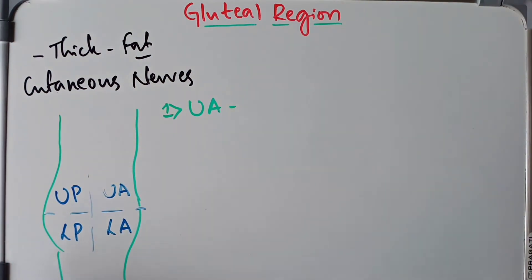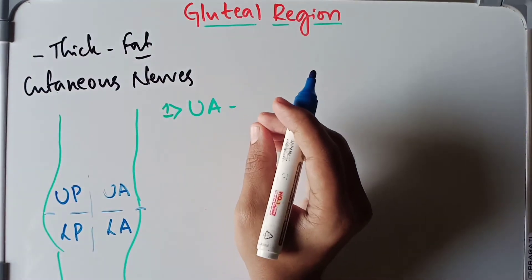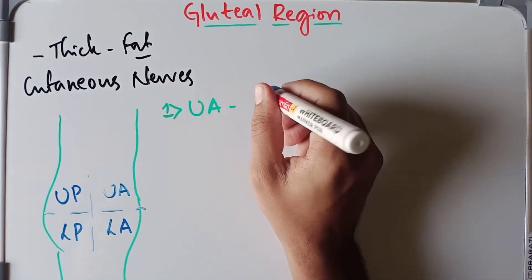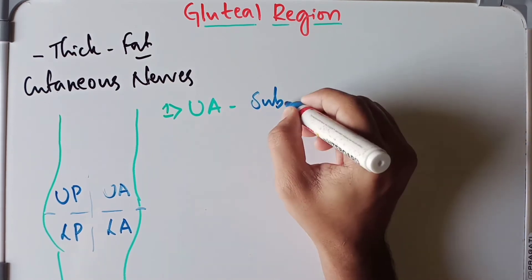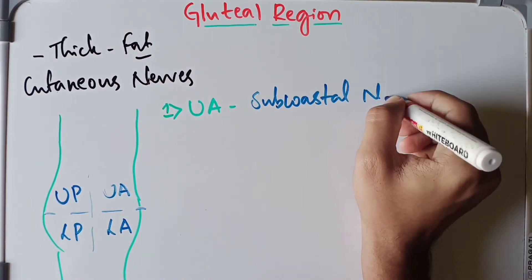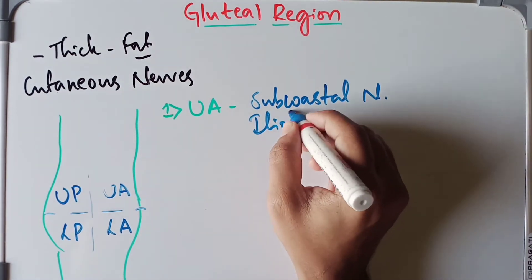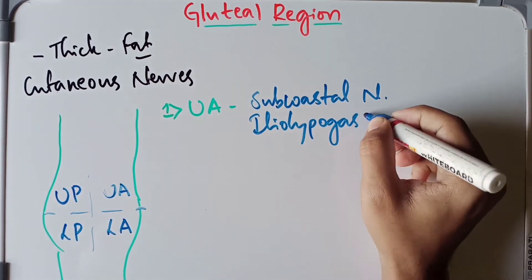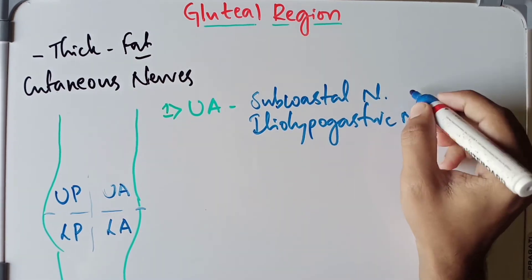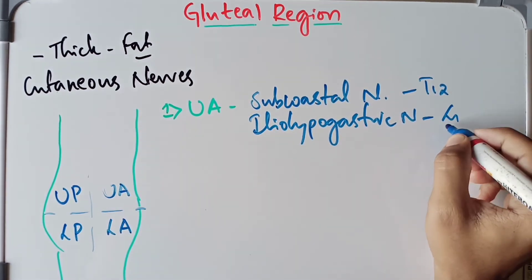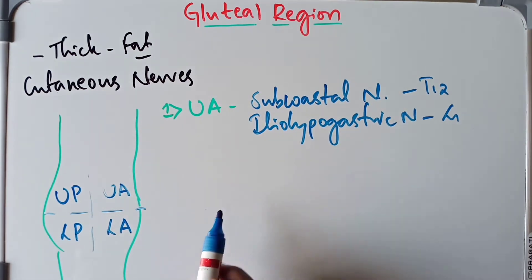The upper anterior compartment of the buttock is supplied by the lateral cutaneous branch of the subcostal nerve as well as the ilio-hypogastric nerve. The subcostal nerve is from the T12 spinal segment and the ilio-hypogastric nerve is from the L1 spinal segment. Their cutaneous branches supply the upper anterior quadrant of the buttocks.